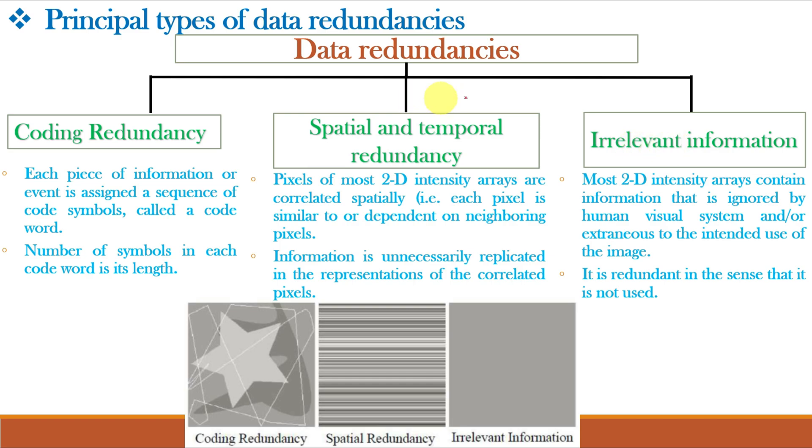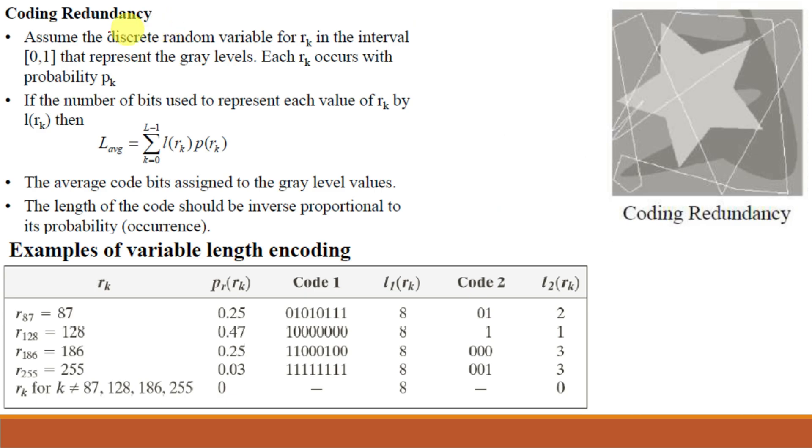Data compression will reduce these redundancies. First is coding redundancy. Say we have this image to compress. For this image, we have only 4 different intensity values: 87 is the value of this dark portion, 128 for this background, 186 for this star portion, and 255 for this white line. The probabilities of occurrence of these intensity levels are shown.